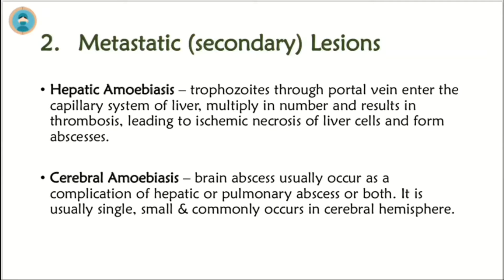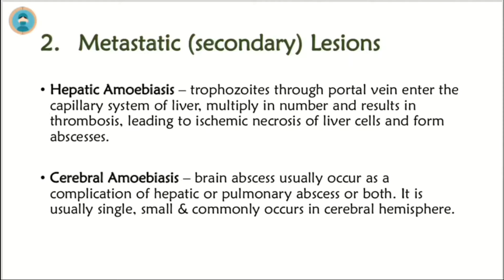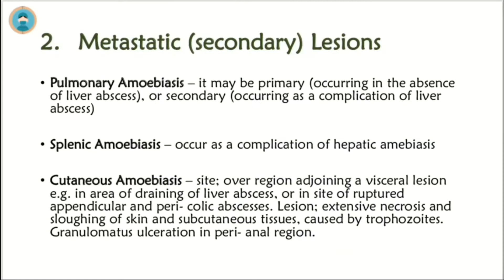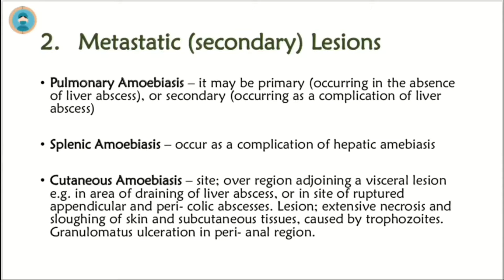Metastatic or secondary lesions are formed in hepatic amoebiasis: trophozoites enter the capillary system of the liver through the portal vein, multiply in number and result in thrombosis, leading to ischemic necrosis of liver cells and abscess formation. Cerebral amoebiasis: brain abscess usually occurs as a complication of hepatic or pulmonary abscess, or both. It is usually single, small, and commonly occurs in the cerebral hemispheres. Pulmonary amoebiasis may be primary or secondary to liver abscess. Splenic amoebiasis occurs as a complication of hepatic amoebiasis. Cutaneous amoebiasis can occur at the site of a ruptured appendicular or pericolic abscess, causing extensive necrosis and sloughing of skin and subcutaneous tissue.